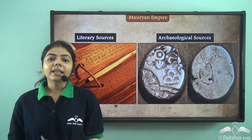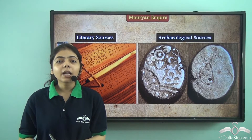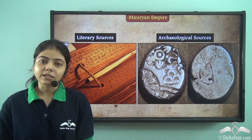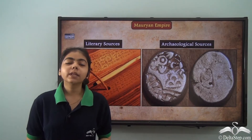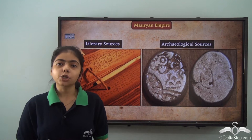In the minor rock edict, 'Devanampiya Priyadasi' had been inscribed. But how do we know that this title was assumed by Ashoka?